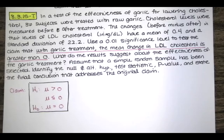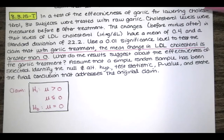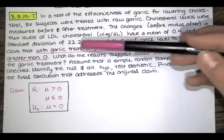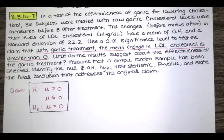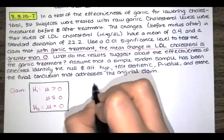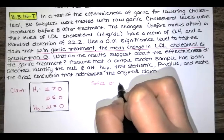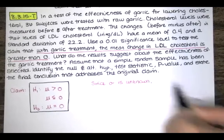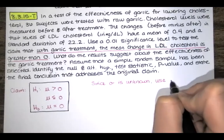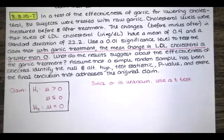To find the test statistic, we first decide whether we're testing a claim about a mean where the population standard deviation is known or unknown. Going through the problem, we have a sample mean of 0.4 and a sample standard deviation of 22.2, and no population standard deviation is listed. Since the population standard deviation is unknown, we're going to use a t-test, meaning we analyze the sampling distribution of sample means using a Student t distribution rather than a standard normal distribution.